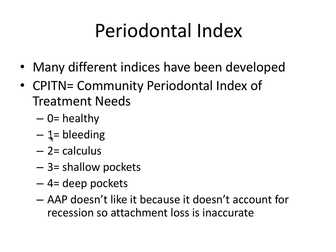A score of one presents with bleeding. Two, we have calculus present. Three is shallow pockets, and four is deep pockets. However, the American Academy of Periodontology doesn't particularly like this measure because it doesn't account for recession, so attachment loss is inaccurate. We know from periodontics that recession goes into the calculation for clinical attachment loss, and if we're not considering it, then we're not presenting the most accurate measure for assessing periodontal disease in a population.